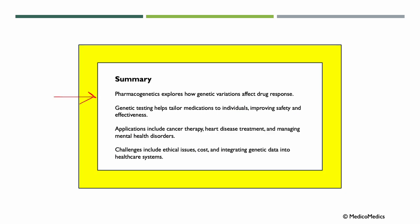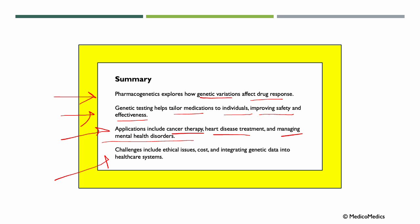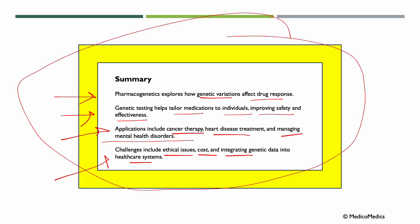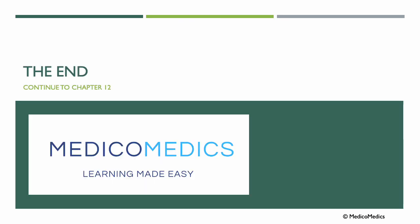In summary, pharmacogenetics explores how genetic variation affects drug response. Genetic testing helps tailor medications to individuals, improving safety and effectiveness. Applications include cancer therapy, heart disease treatment, and managing mental health disorders. Challenges include ethical concerns, cost issues, and integrating genetic data into healthcare systems. Pharmacogenetics is about matching the right medicine to the right person using DNA, making treatments safer and more effective. That's the end of this lecture — continue now to chapter 12.